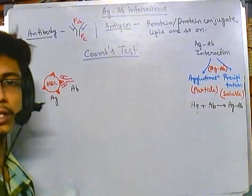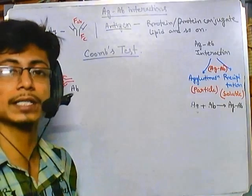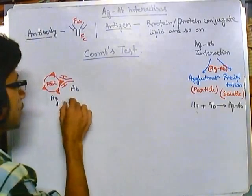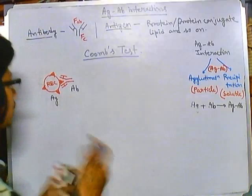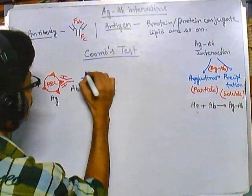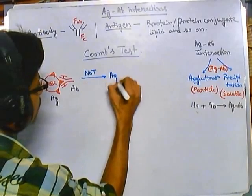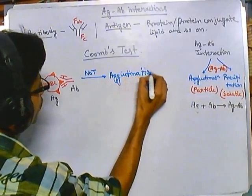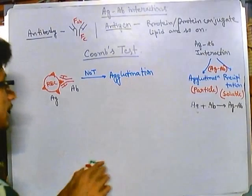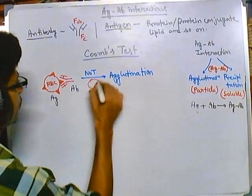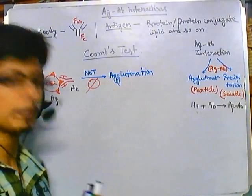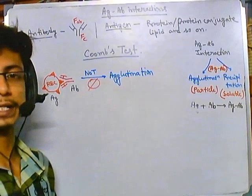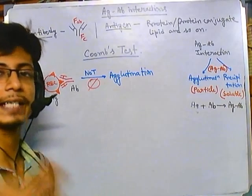The ratio or concentration of antigen-antibody is maintained inside our body in such a way that the antigen-antibody complex does not end up causing agglutination. In many cases, agglutination never happens. A very suitable example of this is the RH factor and anti-RH antibodies.